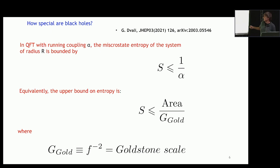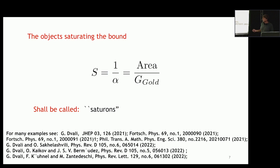This is interesting because it looks exactly like the area law for a black hole — the Goldstone coupling F is the Goldstone scale. It turns out that there is a class of objects — actually almost infinite in number — that saturate this bound. We call them saturons.